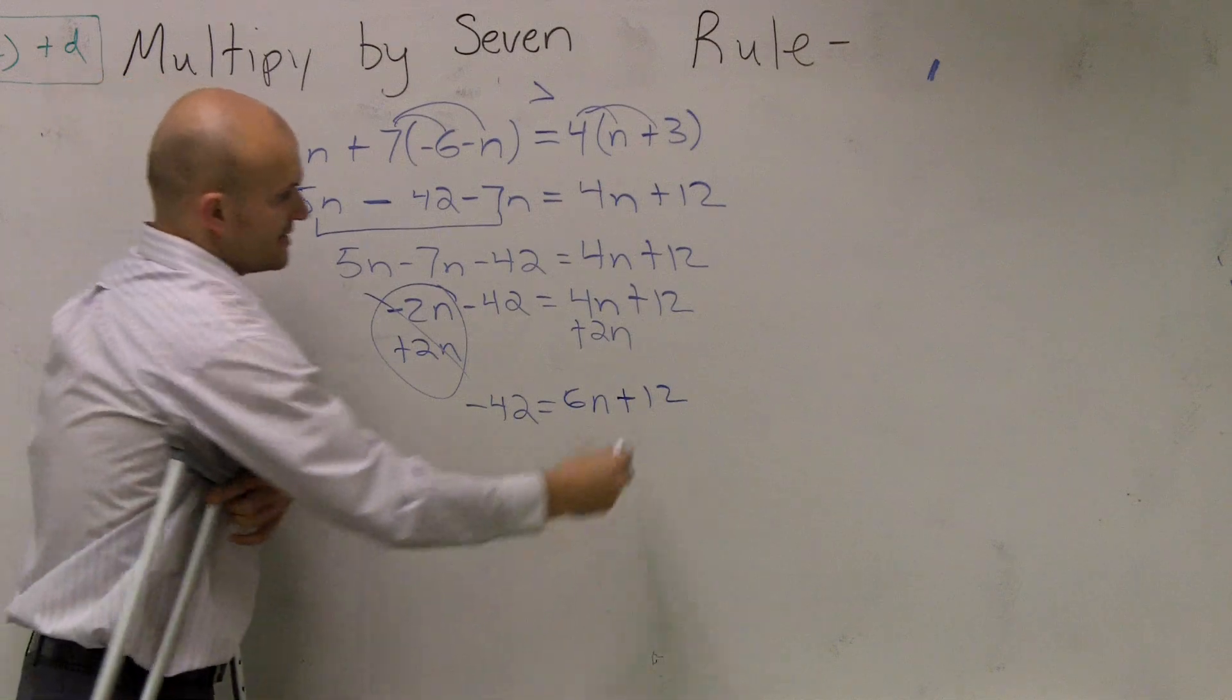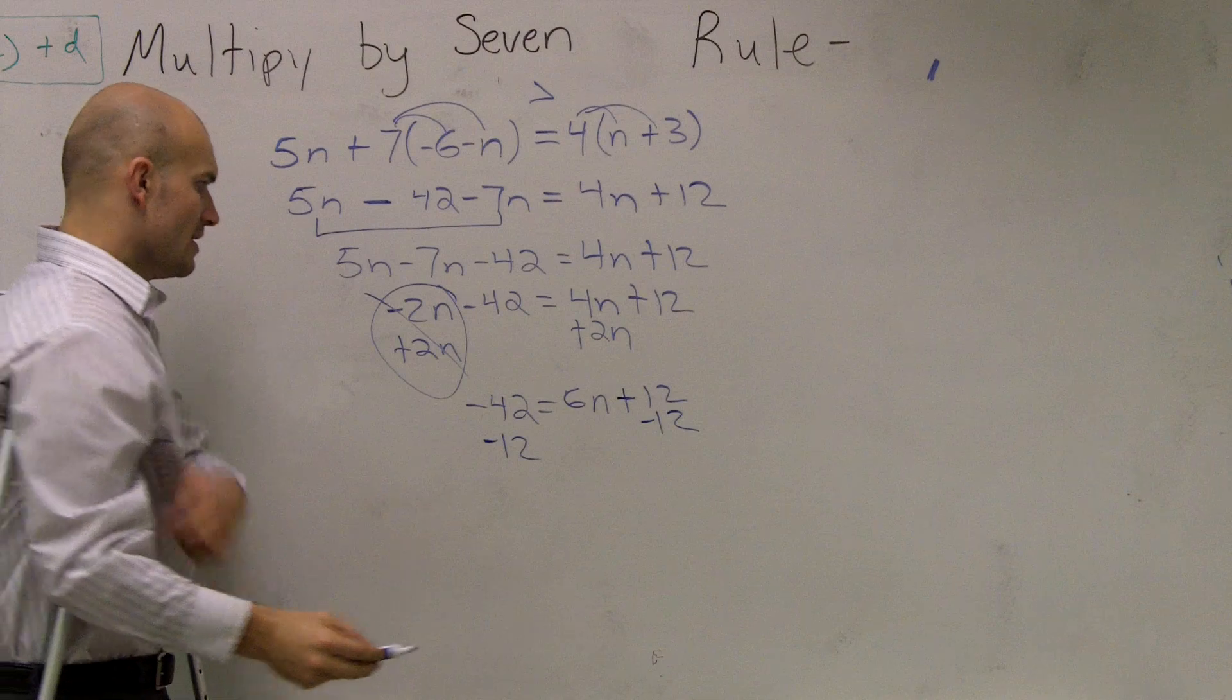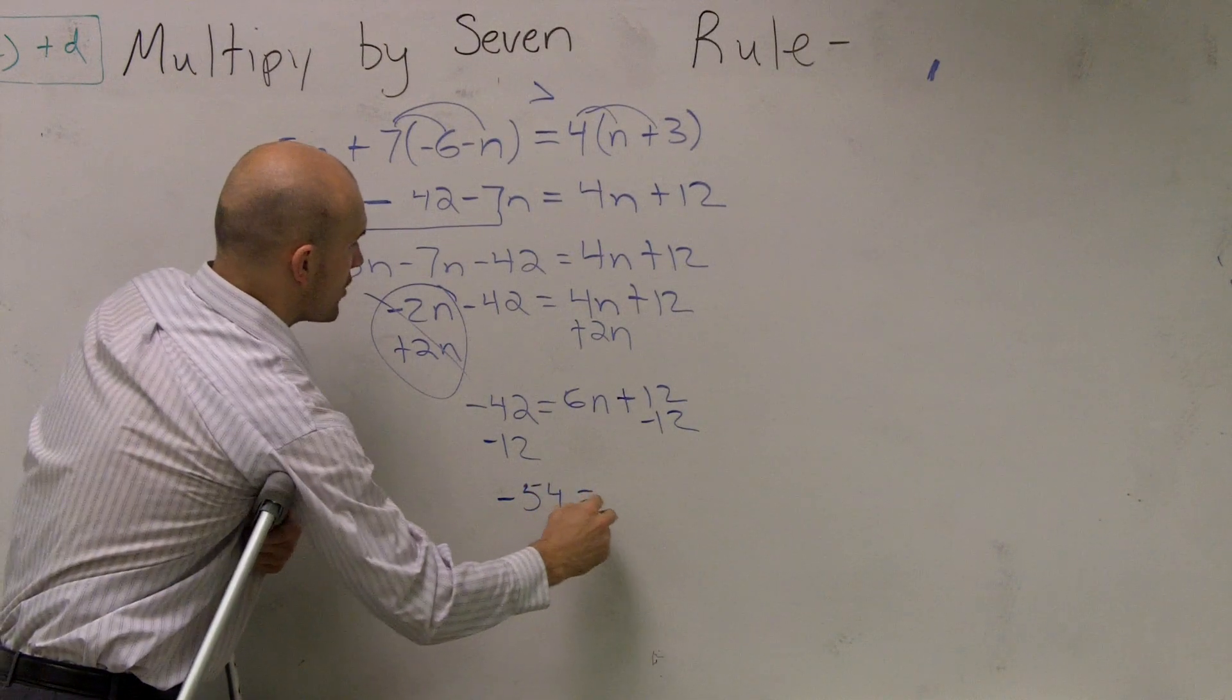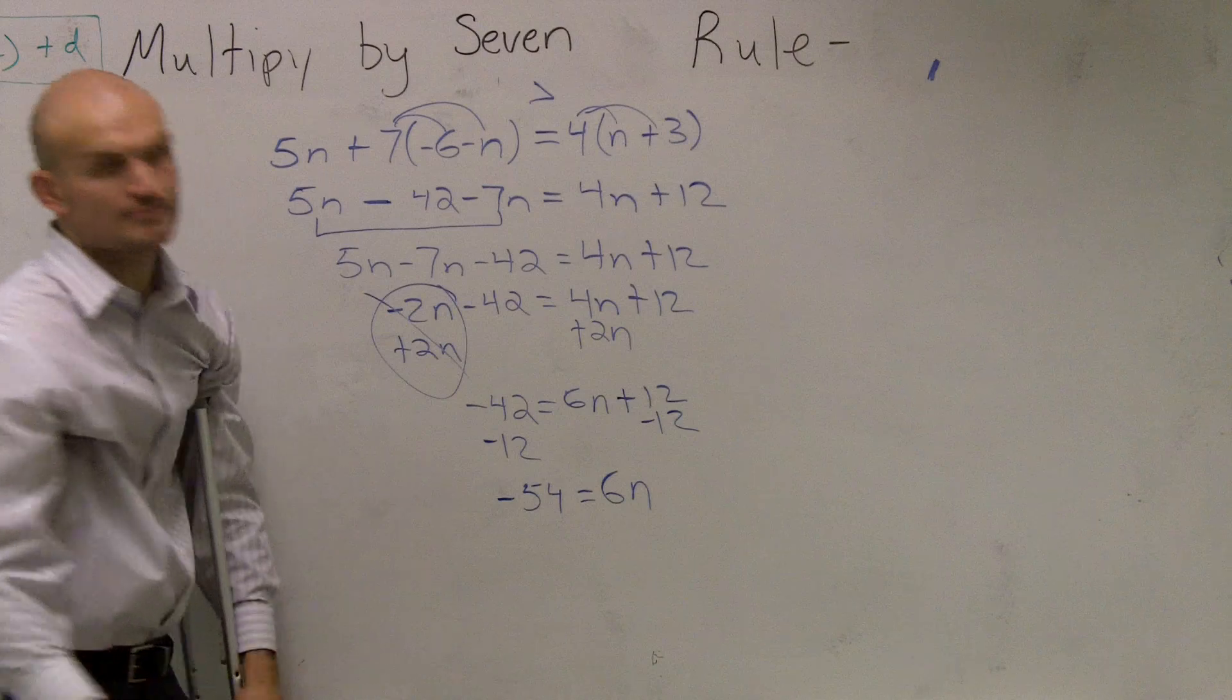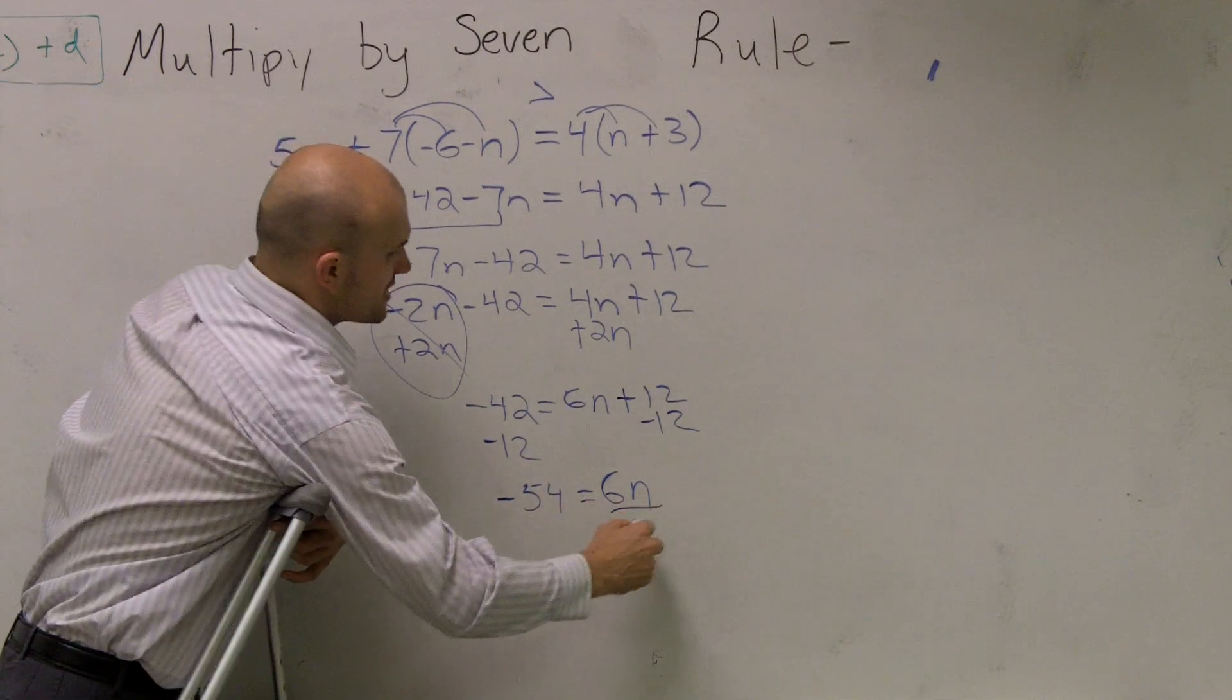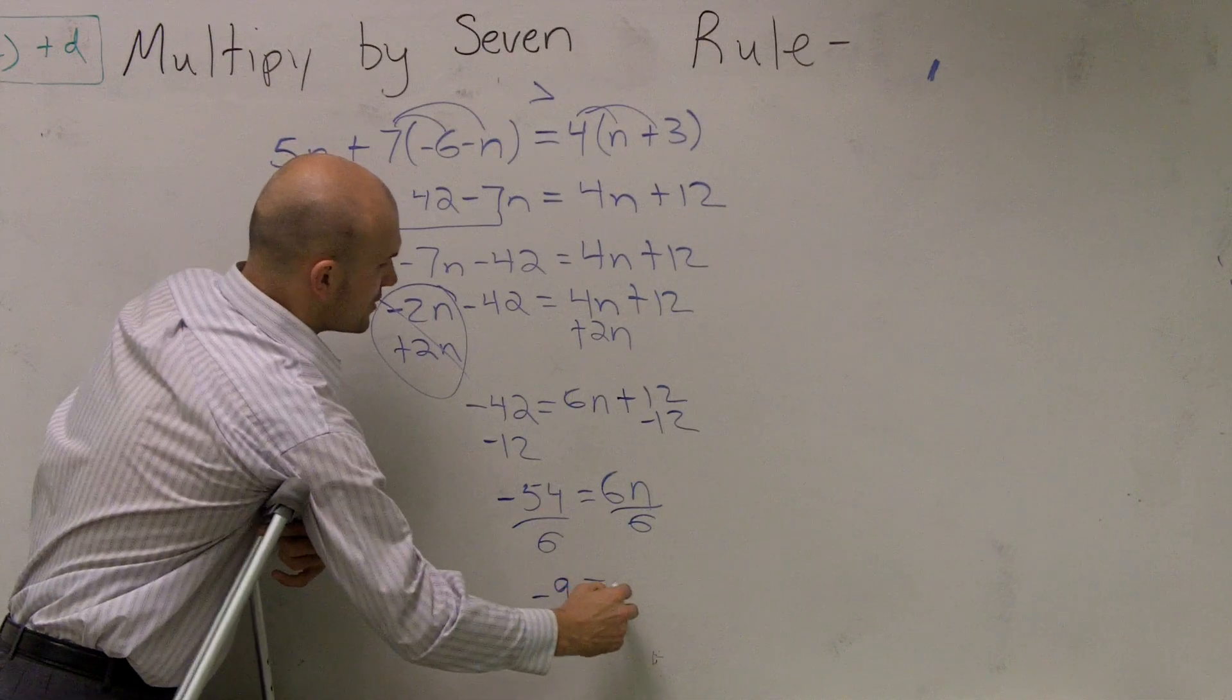Now, I need to get rid of the 12. So I subtract a 12. And then what I'm left with is a negative 54 equals 6N. Now, I see my variable is being multiplied by 6. So I divide by 6, and I get a negative 9 equals N.